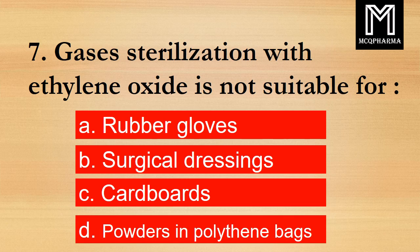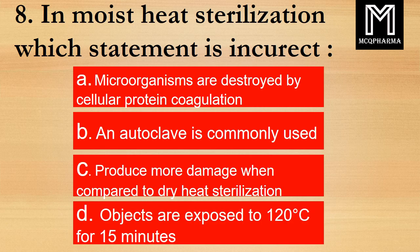Question number 7. Gas sterilization with ethylene oxide is not suitable for? Option A: Rubber gloves. B: Surgical dressings. C: Cardboards. D: Powder in polythene bags. Correct answer: Option D, Powder in polythene bags.